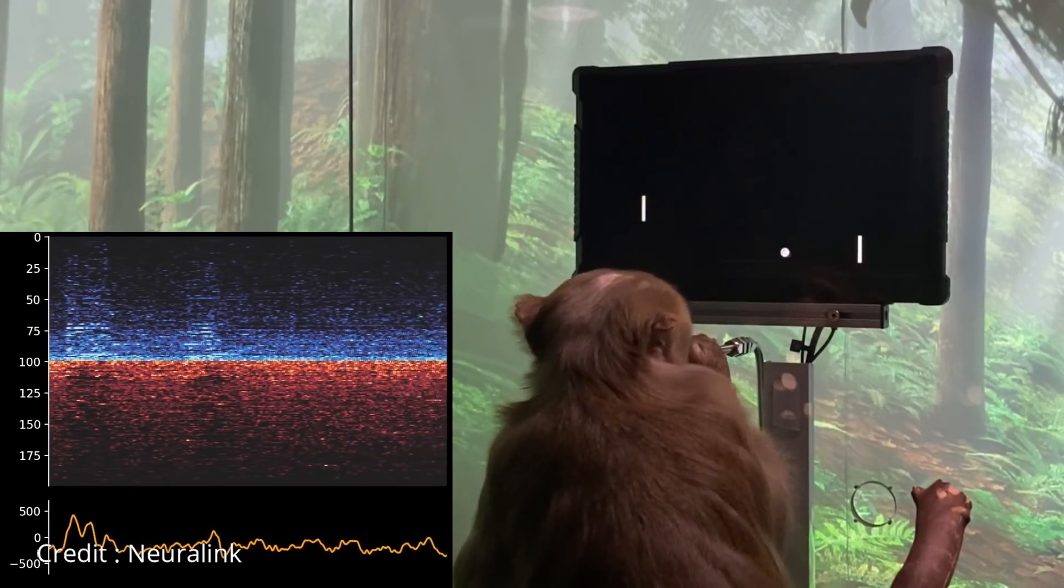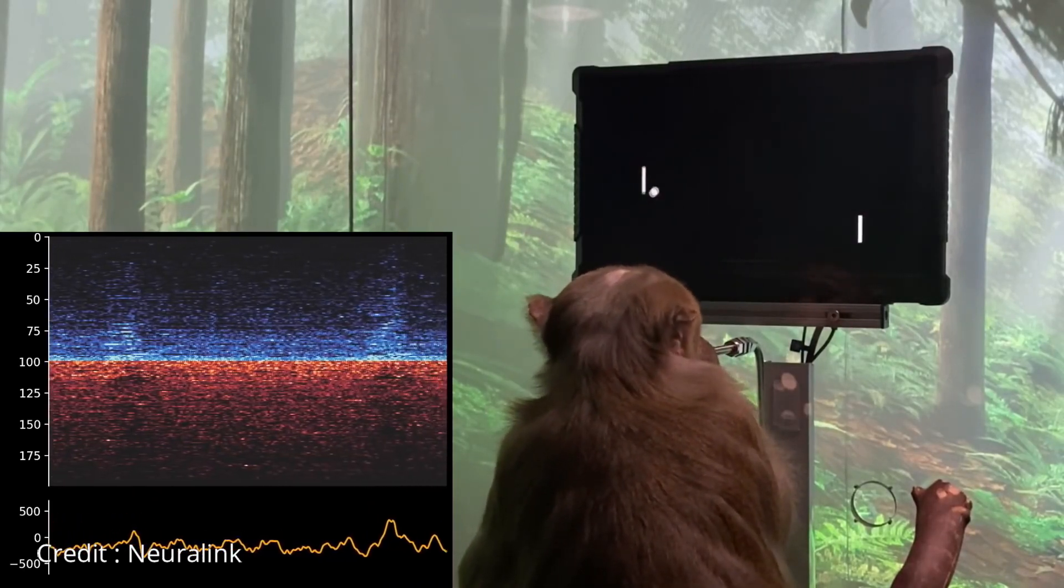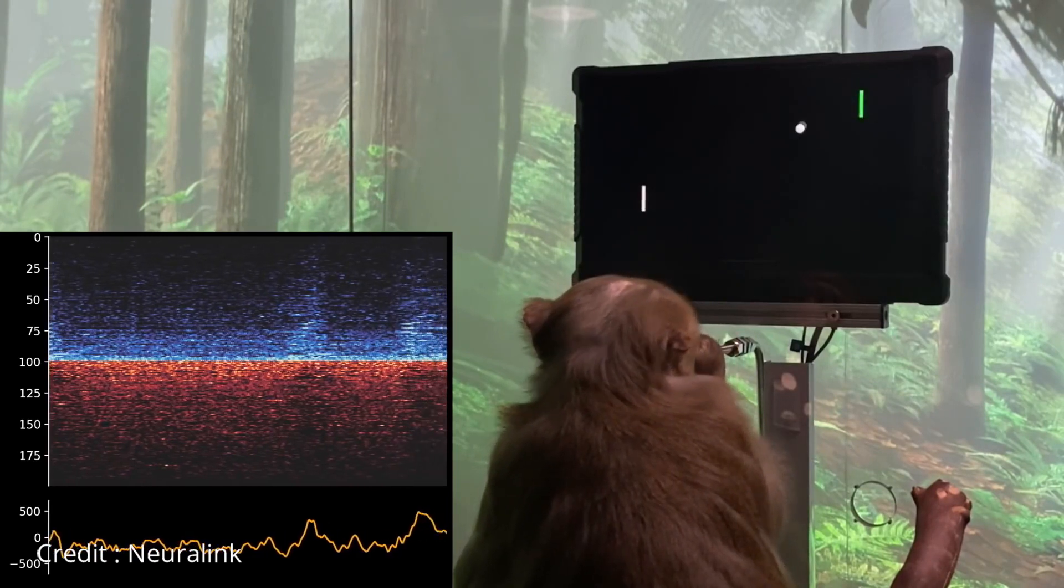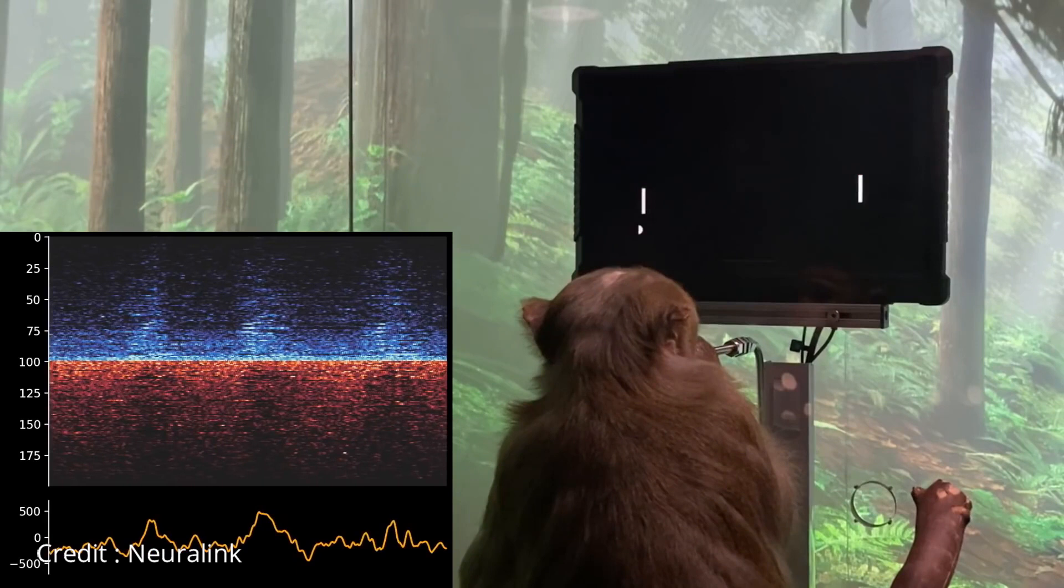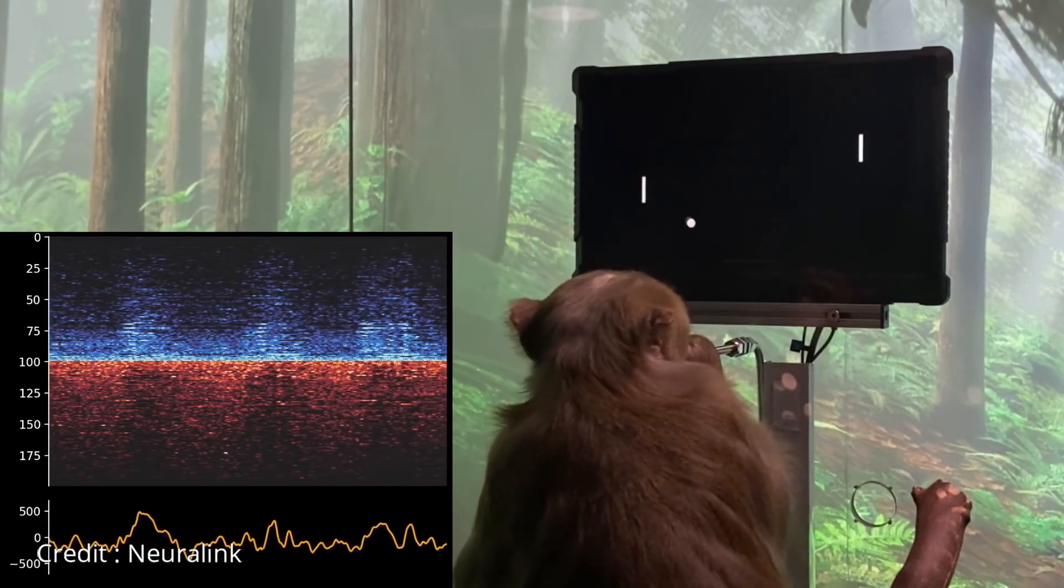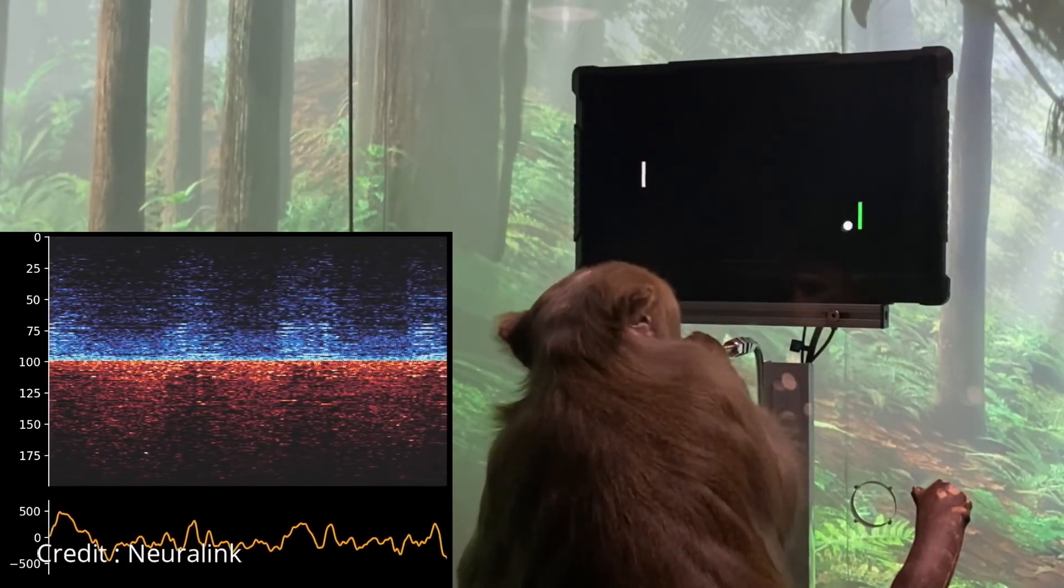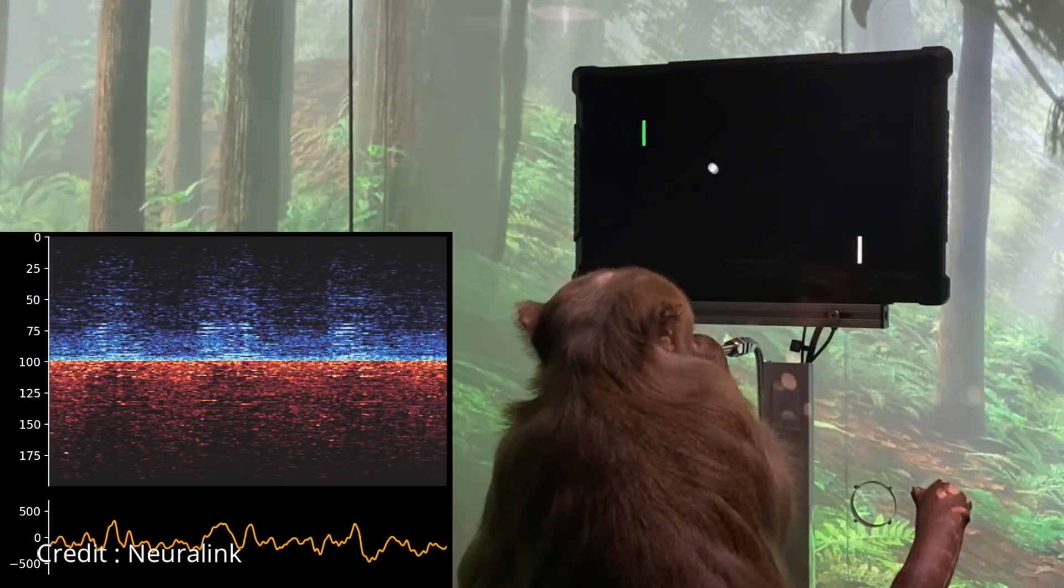This nine-year-old monkey is playing a ping pong game. This monkey had two Neuralink devices put on each side of its brain. It learned how to use a joystick to move a cursor to targets on a screen in exchange for a banana smoothie delivered through a straw.